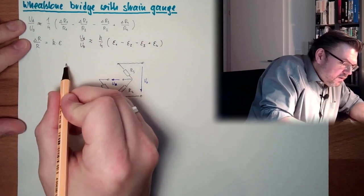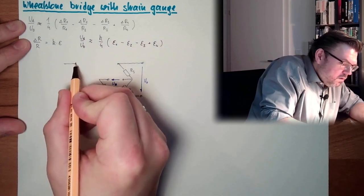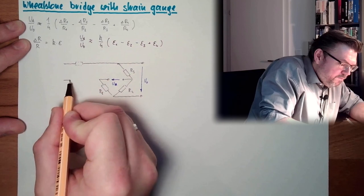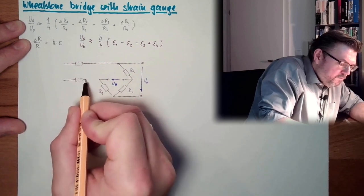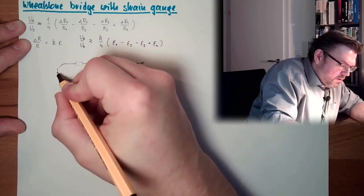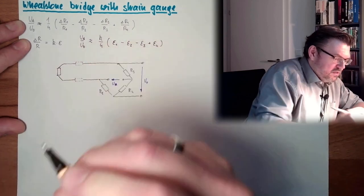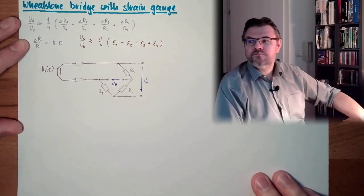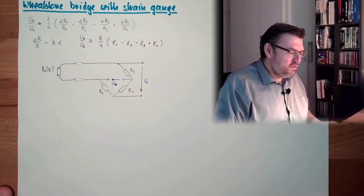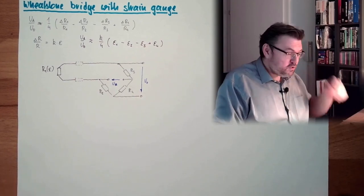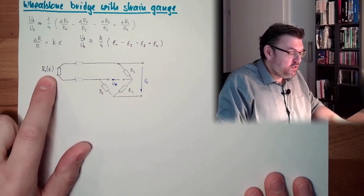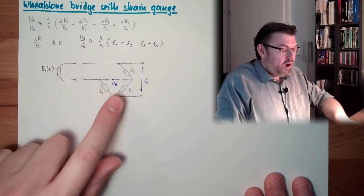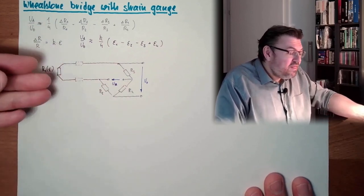I connect the strain gauge here and draw a little resistor as well. R1 is a function of epsilon. What we are measuring is the change of R1 — with delta R1 divided by R1, I can measure epsilon 1. My output voltage is reflecting the strain of this strain gauge.